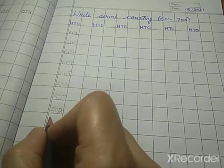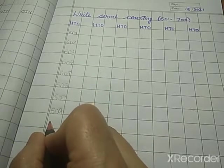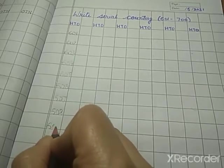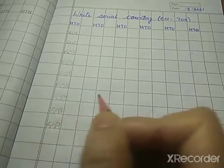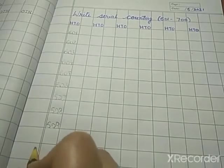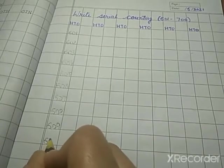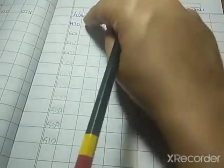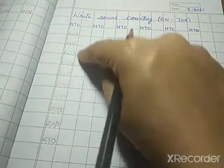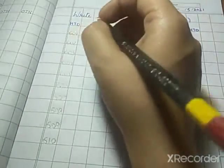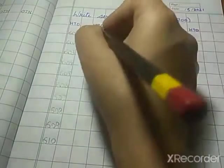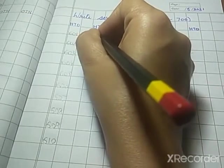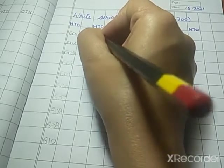After 608, what will come? Yes, 609. Next, 610. So again, you will leave these boxes. Right? This box ko hum chod dinge. Ham yaa per kuch nahi likhi. Right? So next we will write, what comes after 610? Yes, 611. So we will write here, 611.